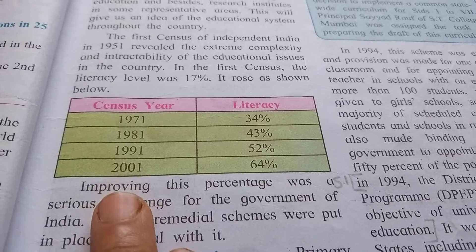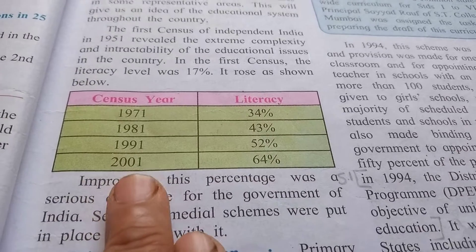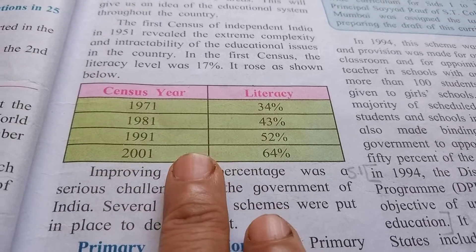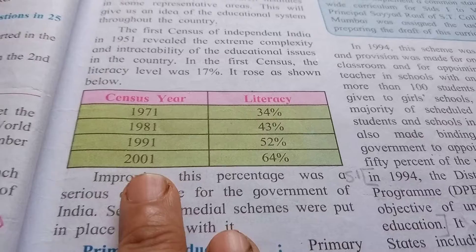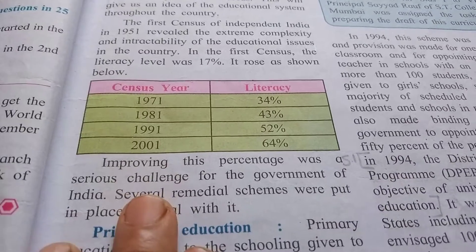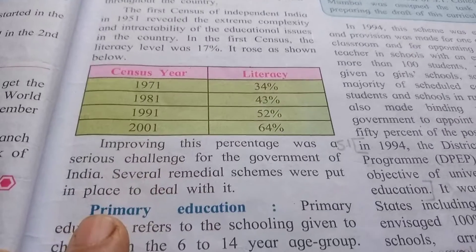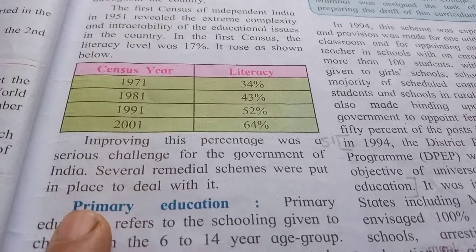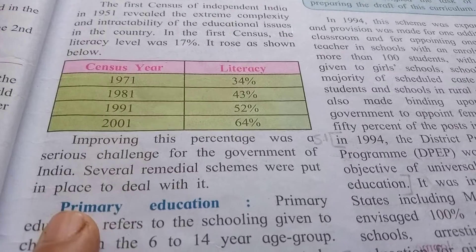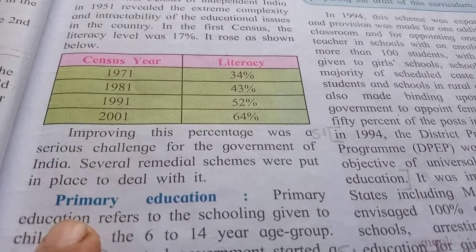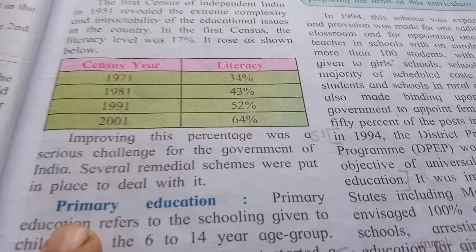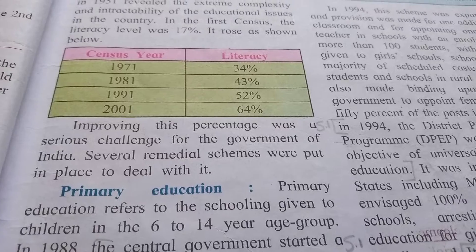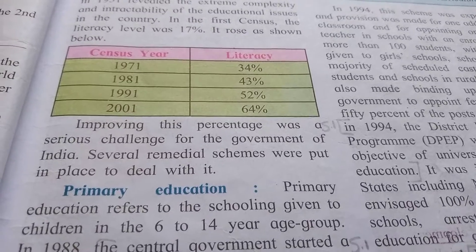So every 10 years, as you can see, there is an increase in the percentage of literate people. Improving this literacy percentage was a serious challenge for the government of India. Several remedial schemes were put in place to deal with it.